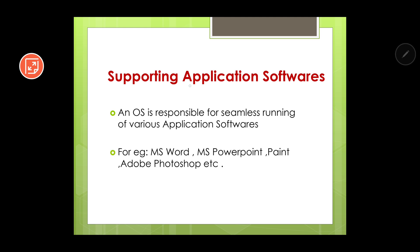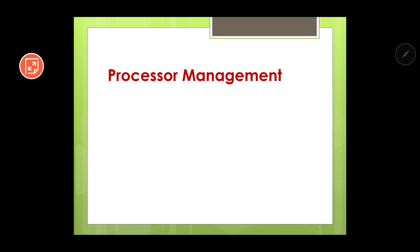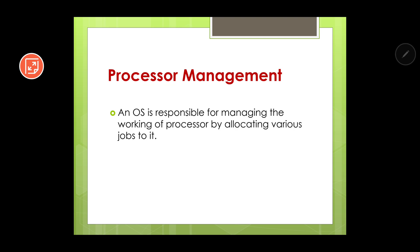Some examples of application softwares are MS Word, MS PowerPoint, Paint, Adobe Photoshop, etc. Next is processor management. An operating system is responsible for managing the working of the processor by allocating various jobs to it. Nowadays in a computer you can do many tasks at the same time, and the management of switching from one task to another is done by the operating system — this feature is known as processor management.